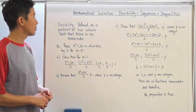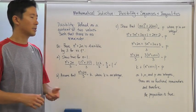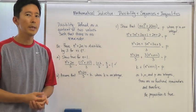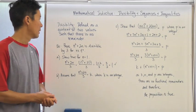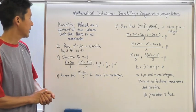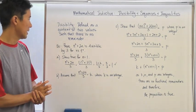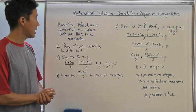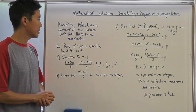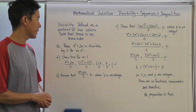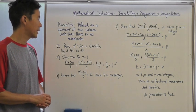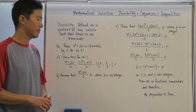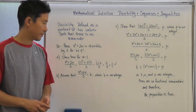Divisibility is defined as a quotient of two values such that there is no remainder. Let's take a look at an example: prove that n cubed plus 2n is divisible by 3 for n is an element of the positive integers.